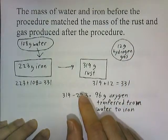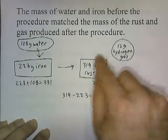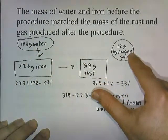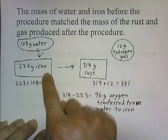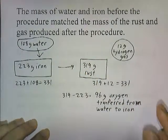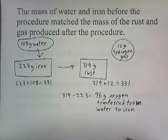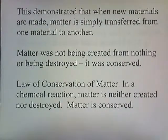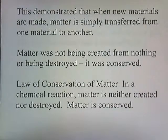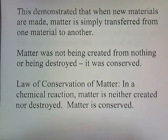The loss of mass in the water — it started with 108 grams and turned into 12 grams of hydrogen gas — was made up for by the gain in mass of the iron. The iron gained the oxygen that was lost by the water. Matter was just being transferred from the water to the iron. This demonstrated that when new materials are made, matter is simply transferred; it is not being created from nothing or being destroyed — it was conserved. This leads to the Law of Conservation of Matter: in a chemical reaction, matter is neither created nor destroyed; matter is conserved.